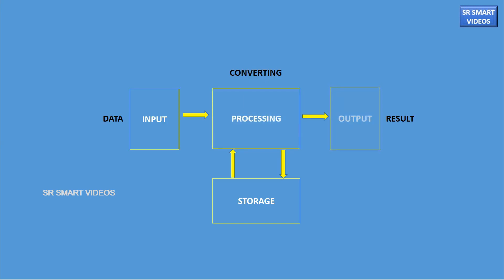Output is another basic function of a computer. This is the process of producing results into meaningful information. The fourth function of the computer system is storage. In this process, the computer is used to store data and instructions.